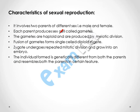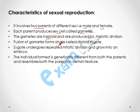In sexual reproduction, two parents of different sex are involved — one is male and the other is female. Each parent produces a sex cell called a gamete. The gametes are haploid cells, produced by meiotic division, and the fusion of gametes forms a single diploid cell called a zygote.